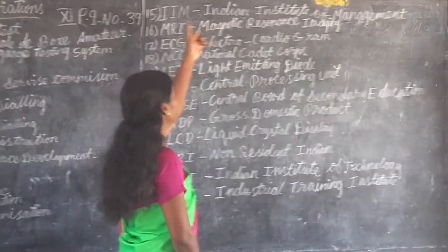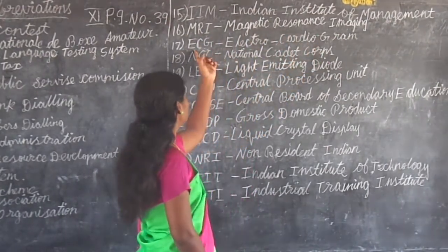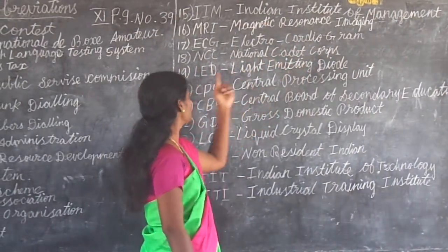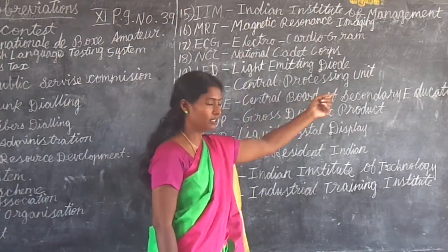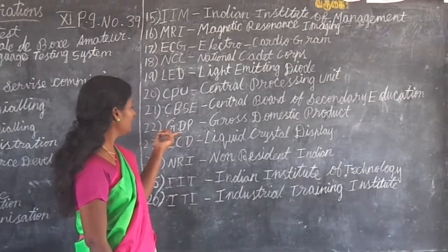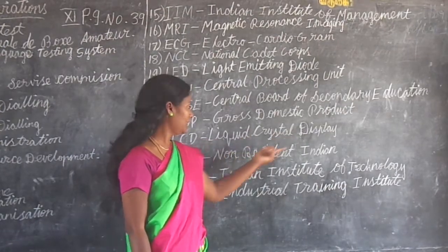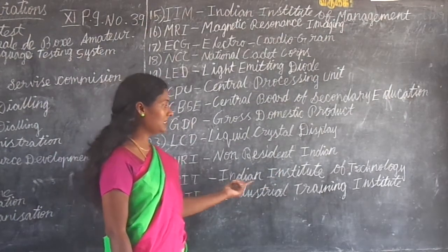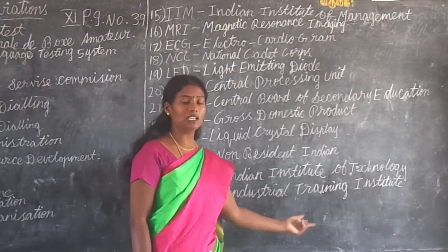IIM - Indian Institute of Management. MRI - Magnetic Resonance Imaging. ECG - Electrocardiogram. NCC - National Cadet Corps. LED - Light Emitting Diode. CPU - Central Processing Unit. CBSE - Central Board of Secondary Education. GDP - Gross Domestic Product. LCD - Liquid Crystal Display. NRI - Non-Resident Indian. IIT - Indian Institute of Technology. ITI - Industrial Training Institute.